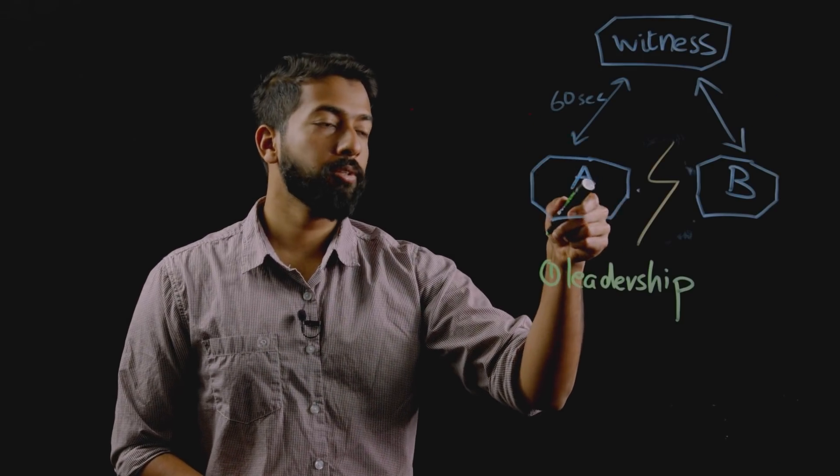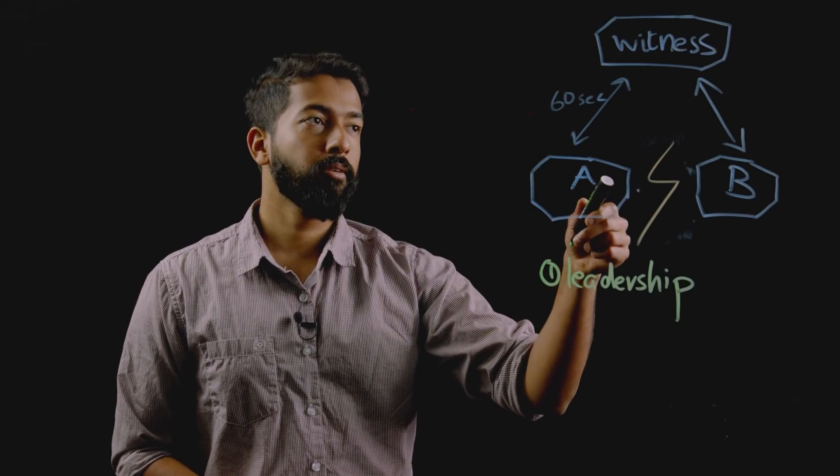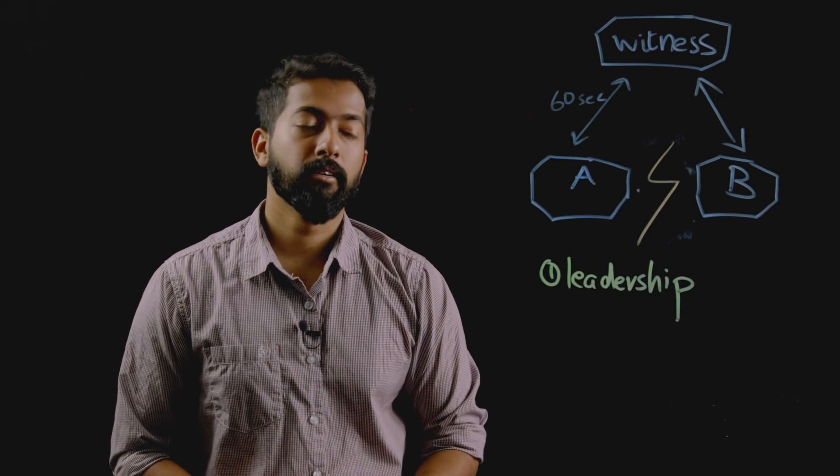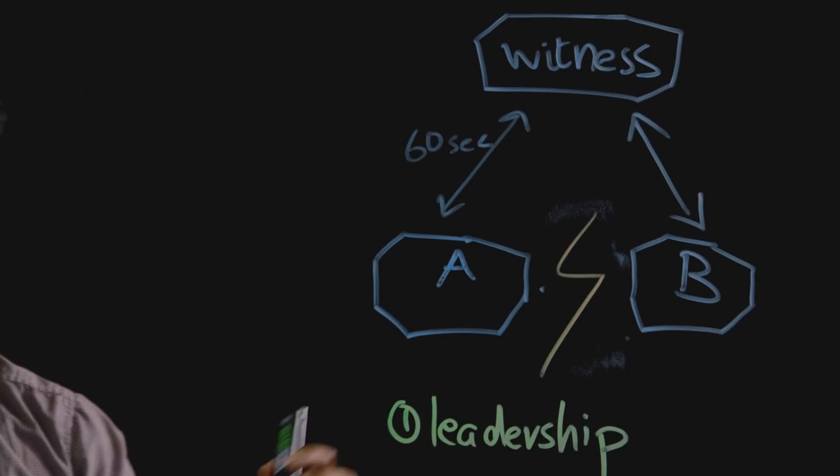So now what happens here is that both nodes A and B request for leadership from the witness VM and the witness picks one of the two nodes as the leader. Let's assume A becomes a leader here.